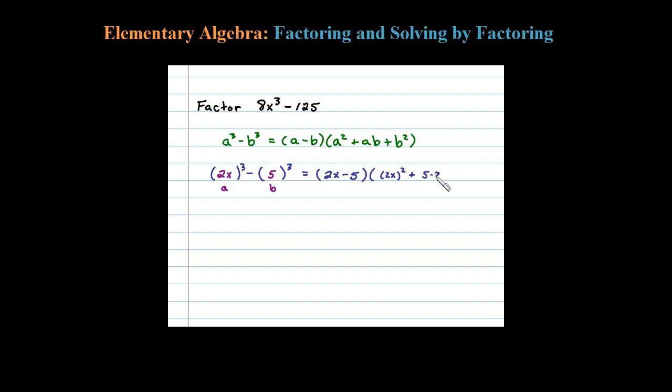Once you substitute into the formula, it's just a matter of cleaning it up. So 2x - 5 times 2x² is 4x², plus 10x, and then plus 25. So here's the factorization of 8x³ - 125.